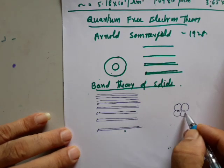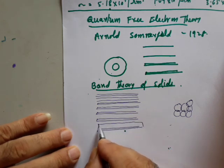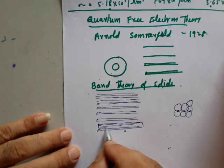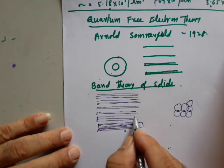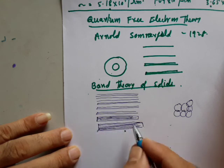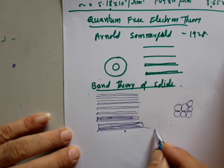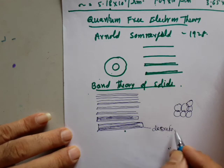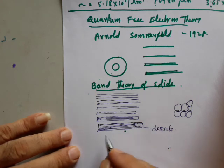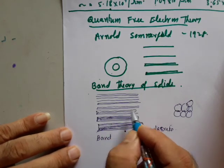Suppose a large number of atoms are brought close to one another. Then a large number of energy bands are going to form — what we call energy bands. Large numbers of bands are formed, and every energy band has an infinite number of energy levels, where each energy level is discrete.